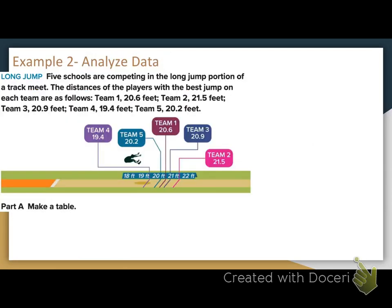Example 2 — a word problem. Five schools are competing in the long jump portion of a track meet. The distances of the players with the best jump on each team are: Team 1 — 20.6 feet, Team 2 — 21.5 feet, Team 3 — 20.9 feet, Team 4 — 19.4 feet, Team 5 — 20.2 feet.